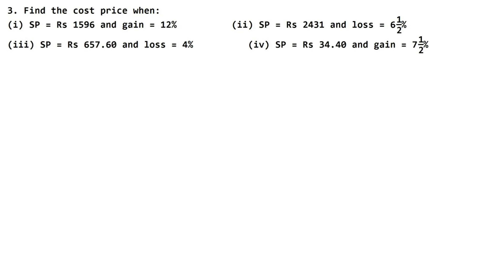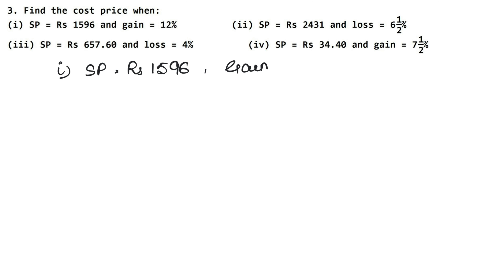In this question, we need to find the cost price when we are given SP and gain percentage. Let's write our first part: SP is Rs. 1596 and gain percent is 12%.